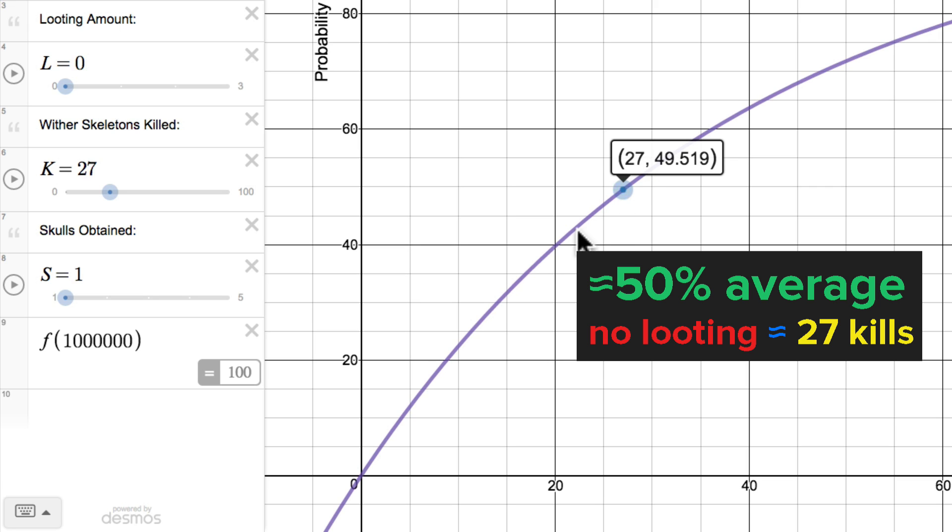You can see, if you have no looting and you kill 27 Skeletons, there is about a 50% chance you will have a skull by then. And we can also find the 50% average with all the kinds of looting.